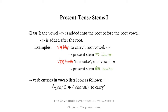Class one verbs form their present tense stems by adding the vowel 'a' into the root before the root vowel, and by adding 'a' after the root. For example, from the root bhr 'to carry,' which has a root vowel ṛ, we get the present tense stem bhara. Adding 'a' in front of the ṛ and 'a' after it causes the vocalic r to turn into its semi-vowel equivalent r, so we get bhara on the basis of bhr.